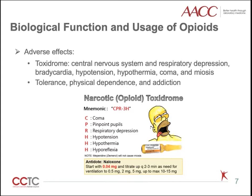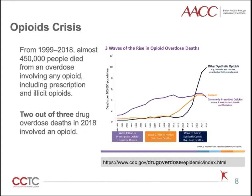The illicit usage of opiates has caused the opiate crisis in the United States. From 1999 to 2018, almost 450,000 people died from an overdose involving any opiates, including prescription and illicit opiates. In 2018, two out of three drug overdose deaths involved an opiate. The opiate crisis has imposed a significant social and economic burden in the United States. In recent years, fentanyl and synthetic opiates have dominated the opiate crisis.